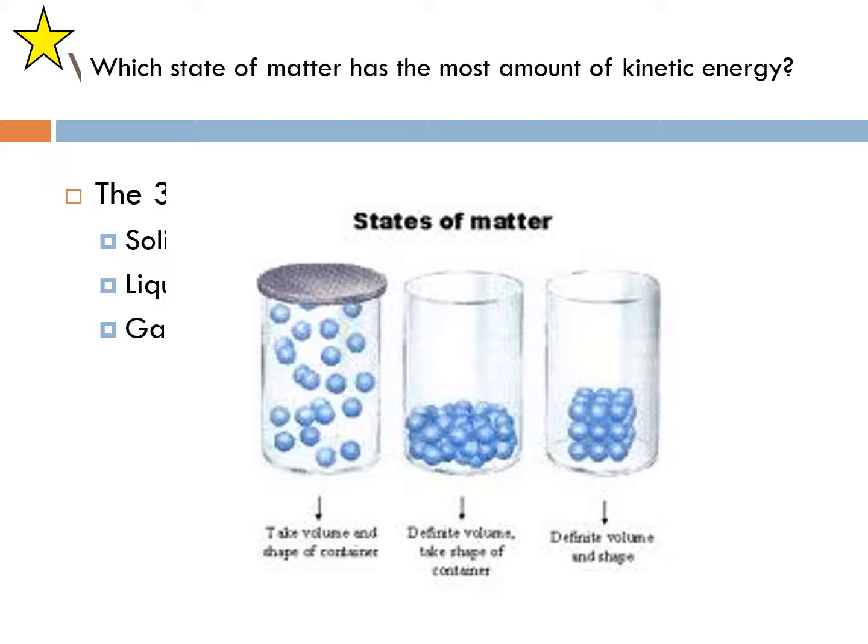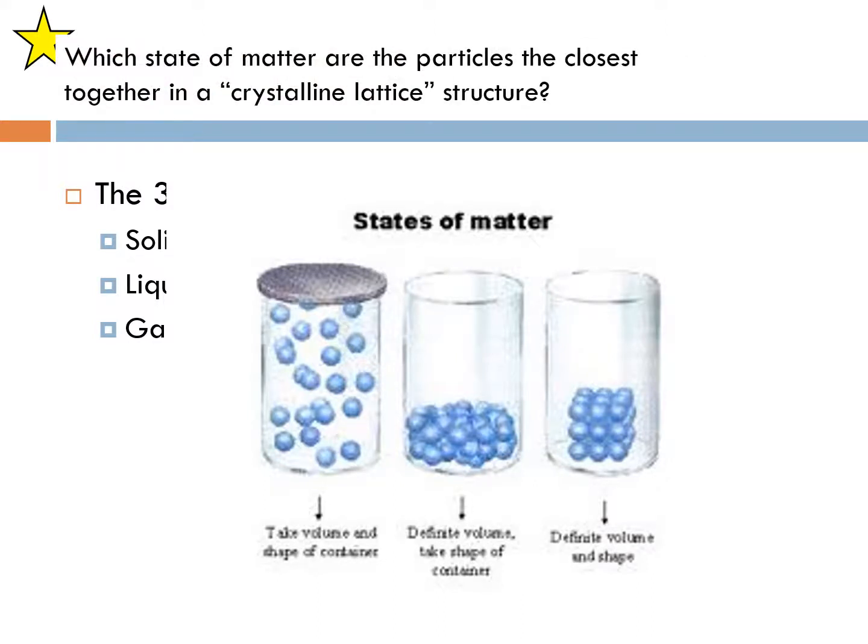Which state of matter has the most kinetic energy? Kinetic energy is movement of particles. If you said gas you are correct. Gases move the most amount of energy, the most amount of active energy. Which state of matter has the least amount of kinetic energy? The other spectrum, no movement, lack of movement, you would say solid. Which state of matter are the particles closest together or crystalline lattice structure? The closest together is going to be solids, so think of a crystalline lattice structure as like salt crystals.